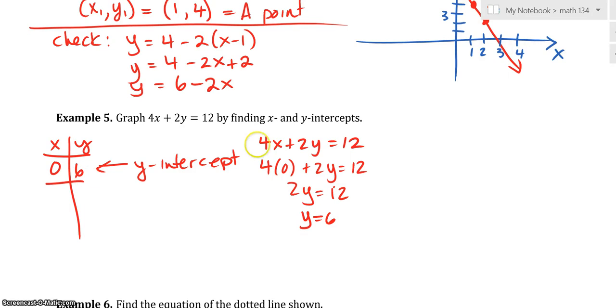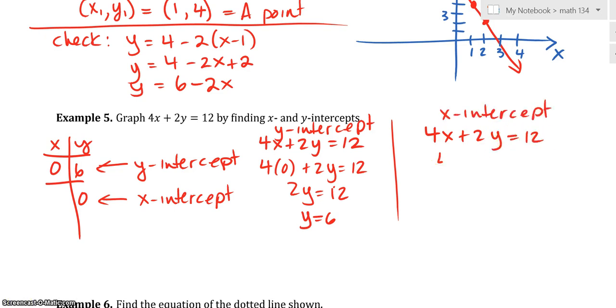So if I plug in 0 for x. 4x + 2y = 12. If I plug in 0 for the x, you would get, that's the answer. You would divide both sides by 2 and you would get y = 6. That's the y-intercept. How would you find the x-intercept? To find the x-intercept, what you do is you plug in y as 0.